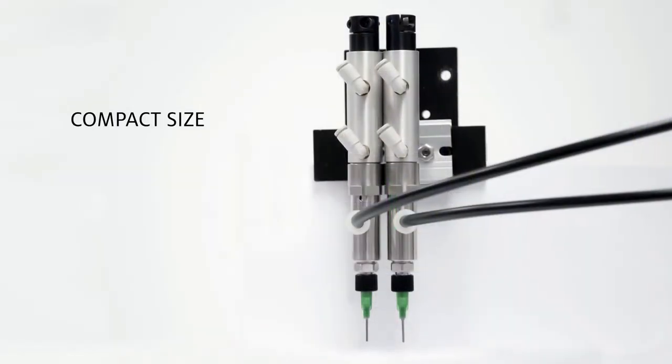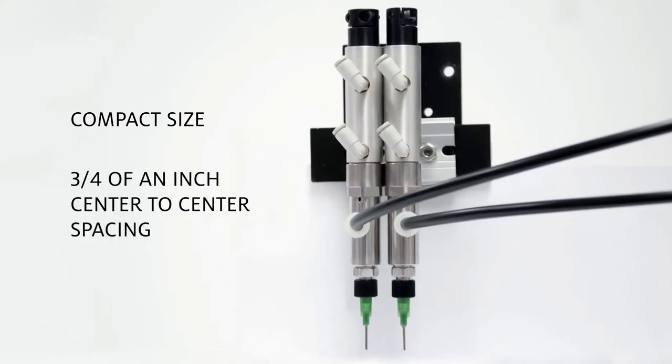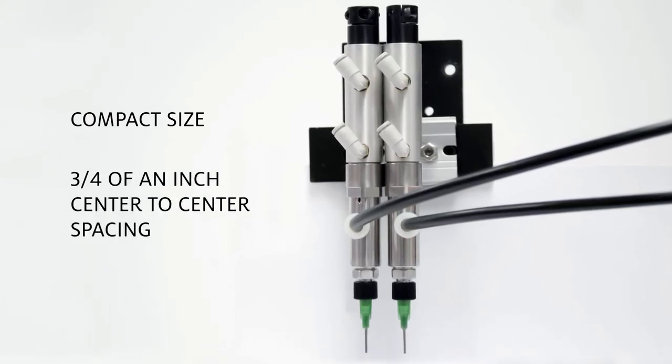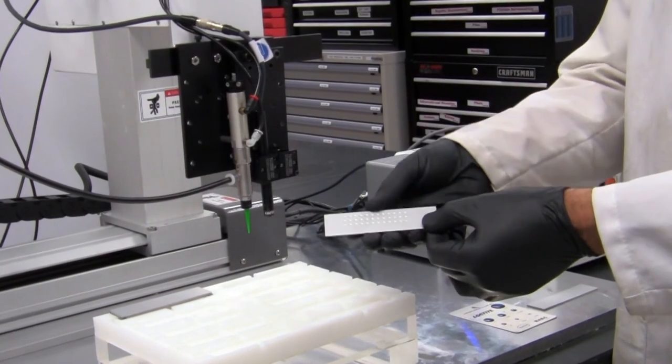The compact size allows you to mount the valves very close together with three-quarters of an inch center-to-center spacing for automated production application lines that require dots to be dispensed at close proximity.